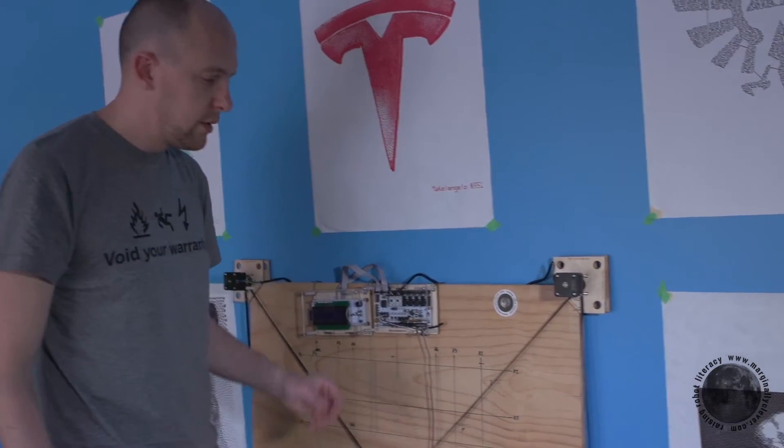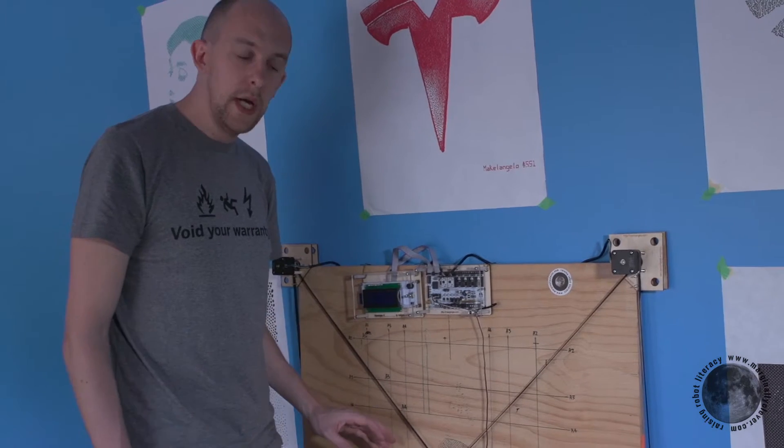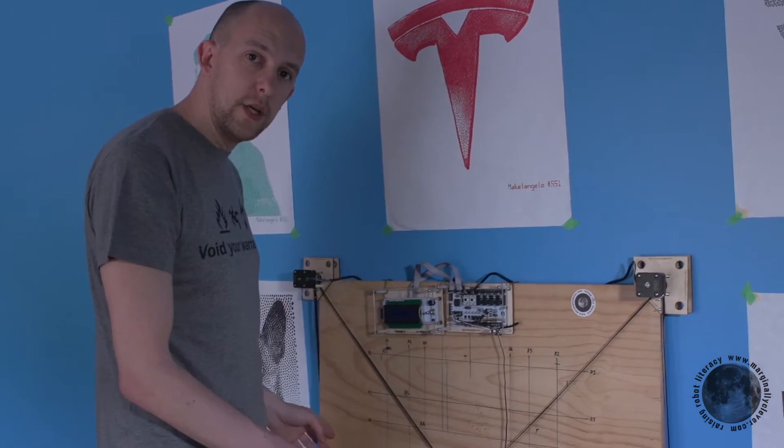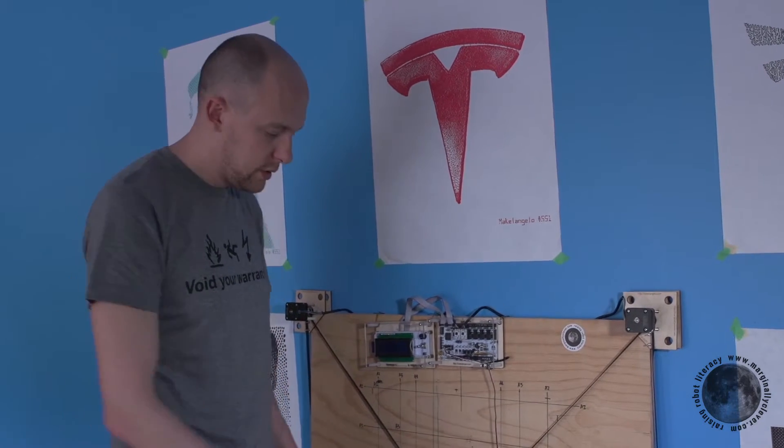The last question, how much belt do you actually need for your Michelangelo? If you're building our default size at three feet by four feet, we put three meters of belt cut in half.